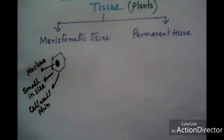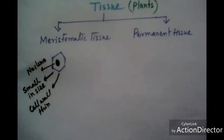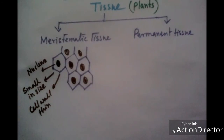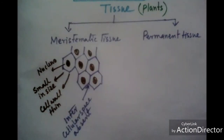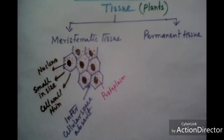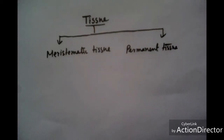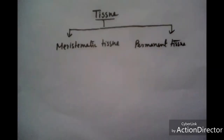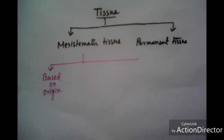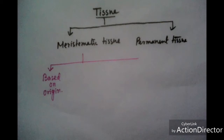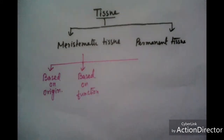There is no intercellular space, and a small vacuole is present in each cell. Meristematic tissue is divided into many types: on the basis of origin, on the basis of function, and on the basis of position.